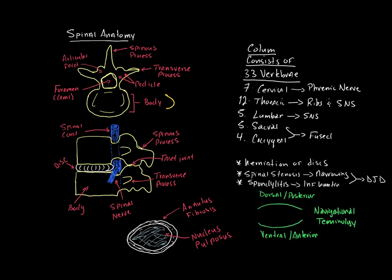This here is going to be ventral or anterior, and this here is going to be dorsal, just to orient you. I have the body, and then I have the canal or the foramen. The canal is where the spinal cord itself goes through — it penetrates down through the canal. On the dorsal aspect, you have bone that traverses the back called the transverse process, and the process that sticks out directly in line with the dorsal aspect is known as the spinous process.